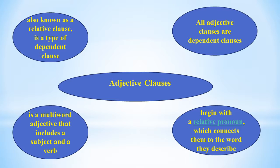Examples of adjective clauses: 'Chocolate, which many people adore, is fattening.' 'People who are smart follow the rules.' 'I can remember the time when cell phones didn't exist.' 'Charlie had a friend whose daughter lives in China.' 'The wine that vintners produce in Tuscany is not cheap.' 'The reason why Sandra went to law school is that she didn't want to be a doctor.' Notice each adjective clause begins with a relative pronoun, connecting it to the noun being described directly before it.